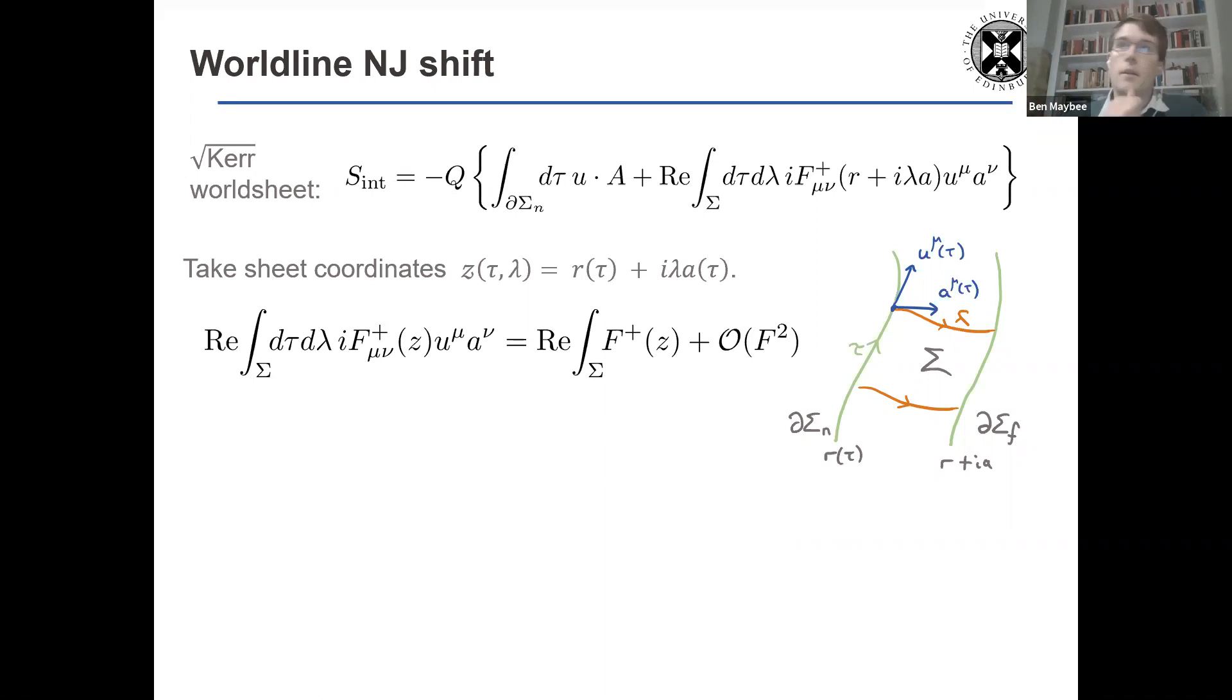And what I'm going to do is go back to what Donal had and introduce coordinates on the worldsheet, complex coordinates Z, and rewrite the worldsheet action. And again, this is up to order curved, order curved squared F squared in electrodynamics terms. So we're going to be dropping higher order terms again consistently. But doing this approximation, we've got the chiral combination of the field and dual field strength.